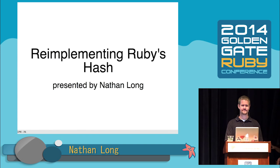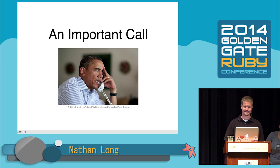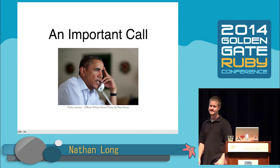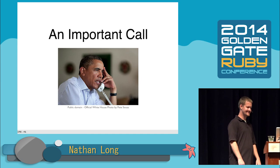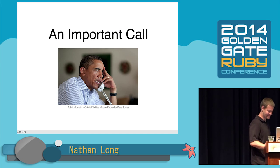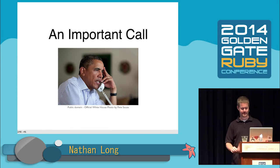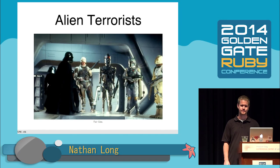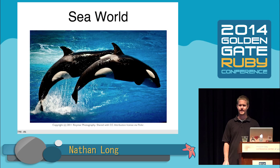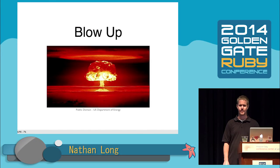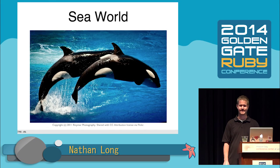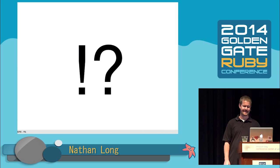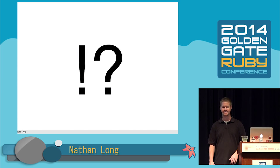So I got a pretty important phone call recently. The President of the United States called me up. I was pretty surprised. He said, we've received news of a grave threat. Unless you reimplement Ruby's hash, alien terrorists will blow up SeaWorld. I think he might have said some other stuff, but honestly, I was already typing.